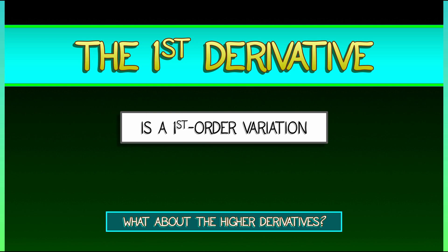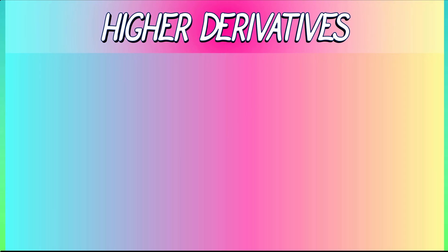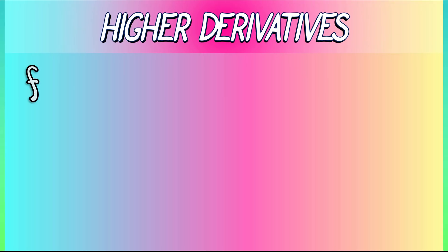We're going to begin thinking in terms of the notation that we use. Consider a function f and its first derivative, f prime. Now, we can keep going. We could talk about the second derivative, which we will sometimes call f double prime.